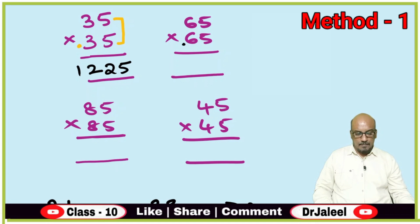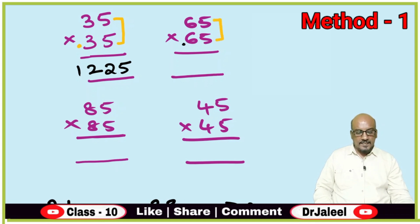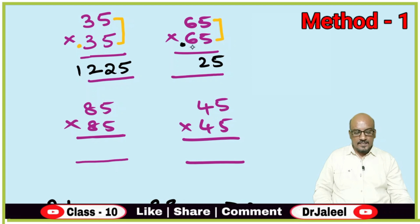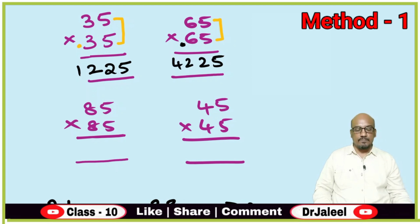Let us go for another example. First, go for the right side digits: 5 × 5 is 25. Here for the 6, you increase 1 to get 7. Then 7 × 6 is 42. So the answer is 4225.